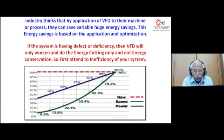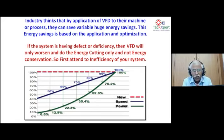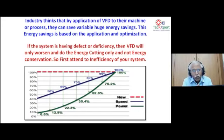The industry often thinks VFD is a cash cow for any system — but VFD is not a cash cow. VFD facilitates matching the utility to production requirements. Some textile mills claim 50–60% savings from a VFD on a 5.5 kW blower, but that's not realistic — the end-to-end static pressure for a given duct must be maintained.